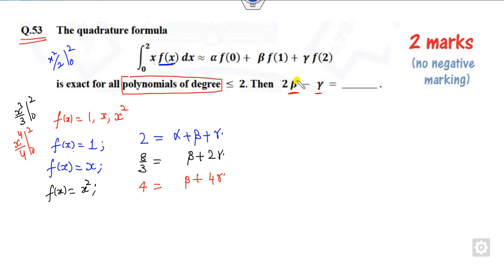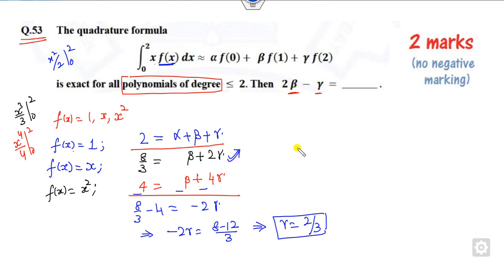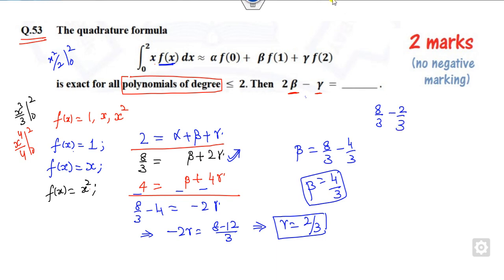Now solve for α, β, and γ. Subtracting the second equation from the third: (β + 4γ) minus (β + 2γ) = 4 minus 8/3, giving 2γ = 4/3, so γ = 2/3. Substituting back: β = 8/3 minus 4/3 = 4/3. Then substituting into the first equation: α = 2 minus β minus γ = 2 minus 4/3 minus 2/3 = 6/3 = 2. So the right answer is 2.